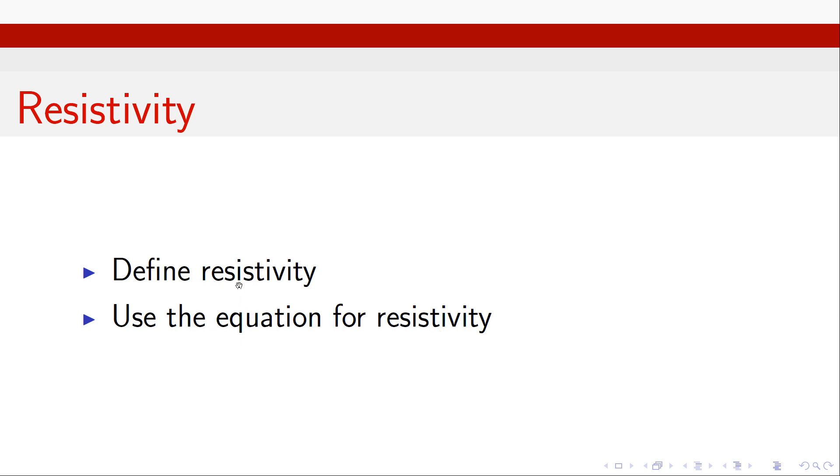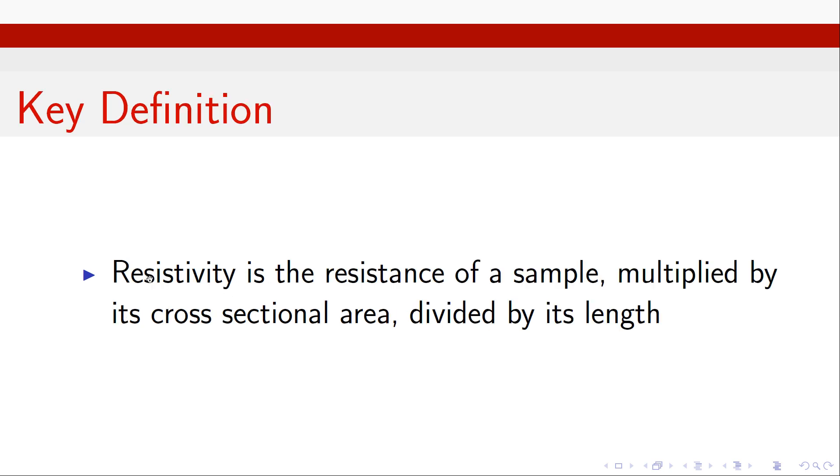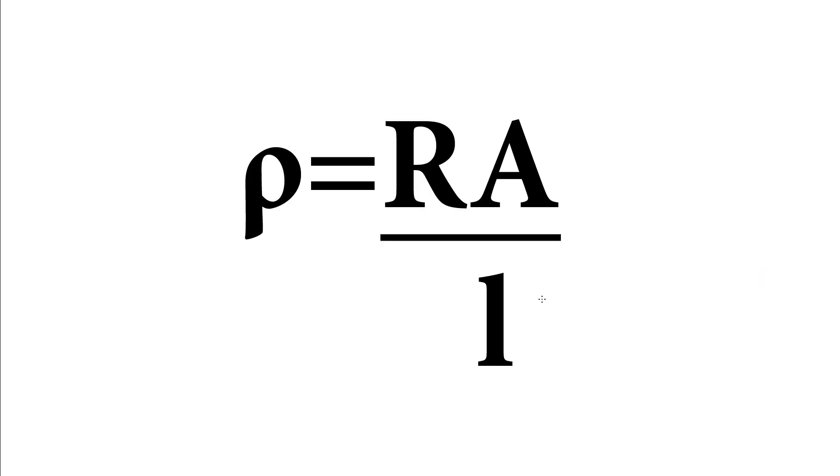There's also an equation which links resistivity with resistance. So our definition for resistivity is it is the resistance of a sample multiplied by its cross sectional area divided by its length. Now that really is just a wordy version of the equation which we see here. So the symbol we use for resistivity is this rho, it's a Greek letter, is equal to the resistance of a sample multiplied by the area divided by the length.